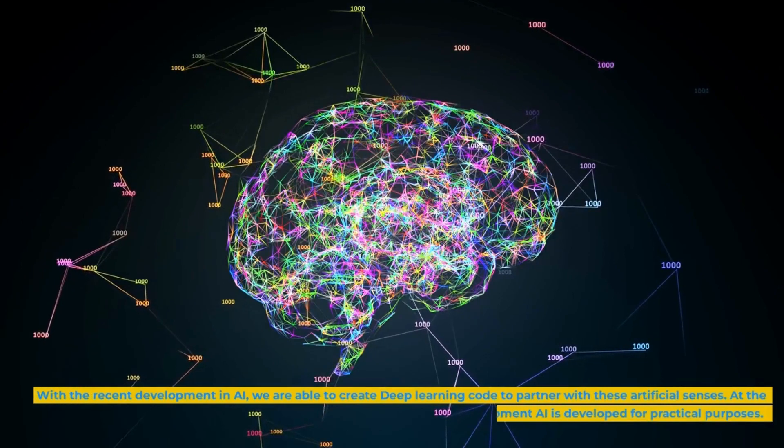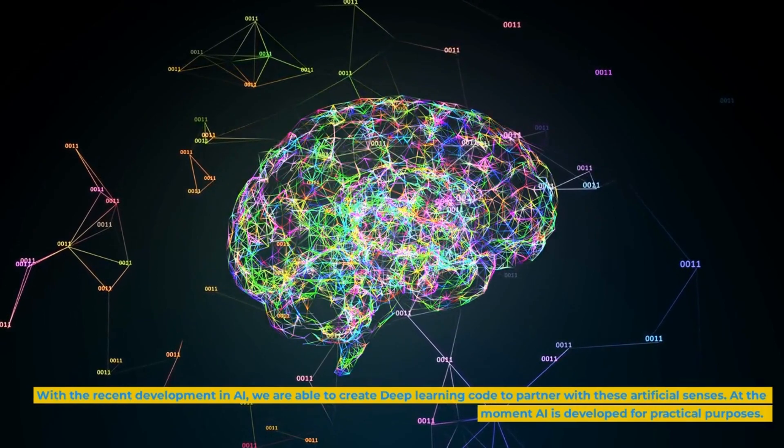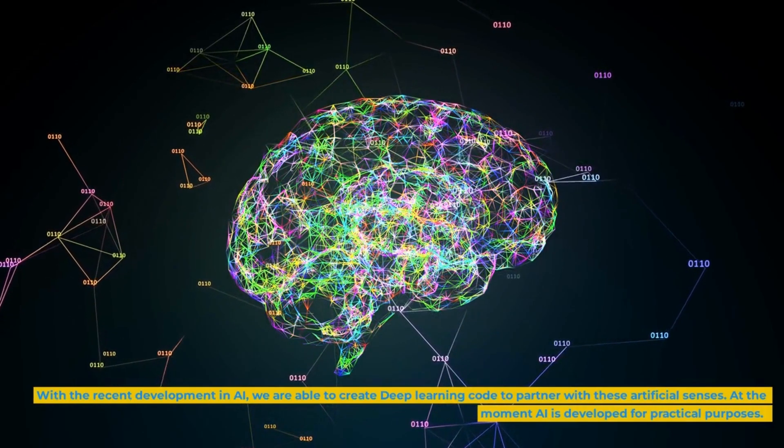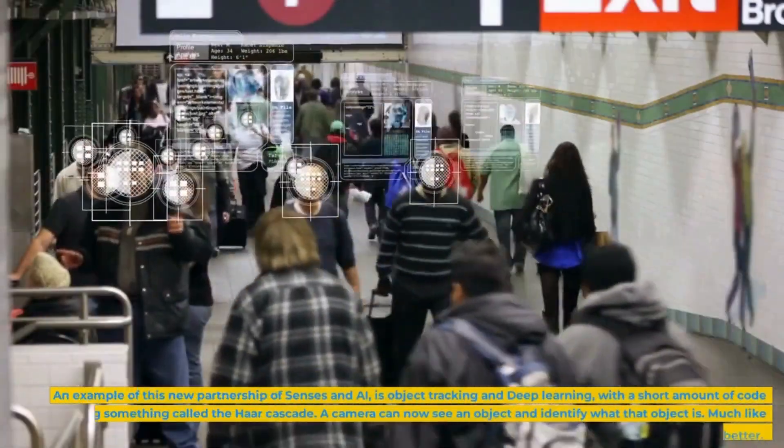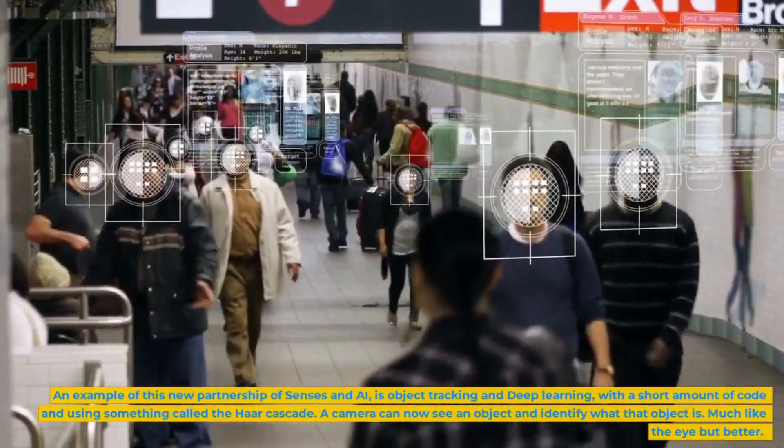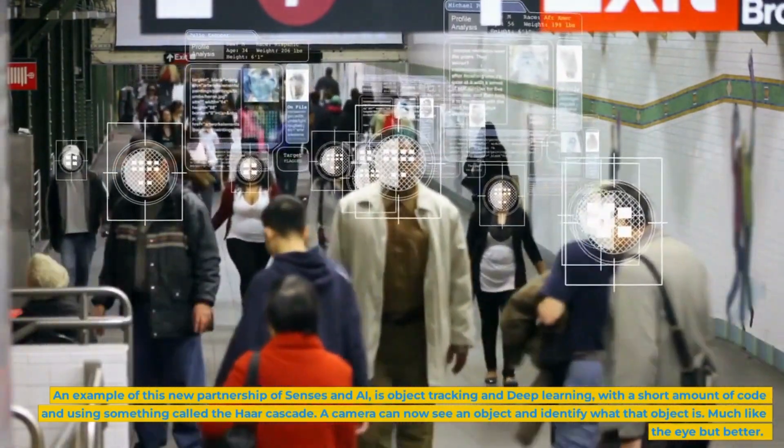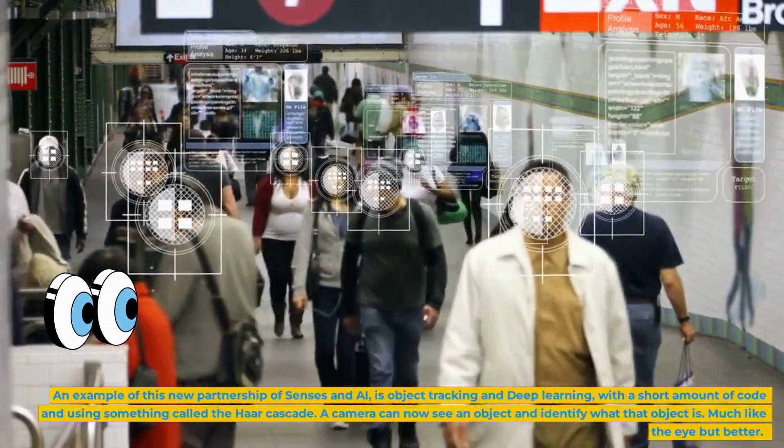With the recent development in AI, we are able to create deep learning code to partner with these artificial senses. At the moment AI is developed for practical purposes. An example of this new partnership of senses and AI is object tracking and deep learning. With a short amount of code and using something called the HAR cascade, a camera can now see an object and identify what that object is, much like the eye but better.